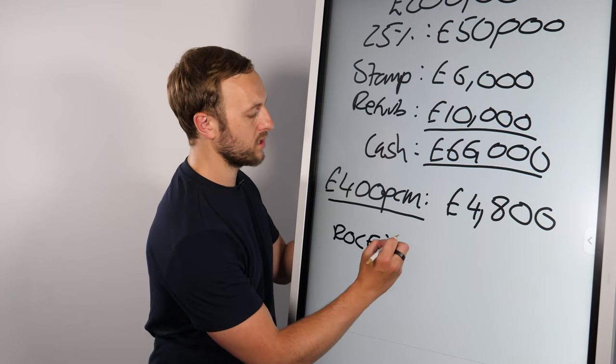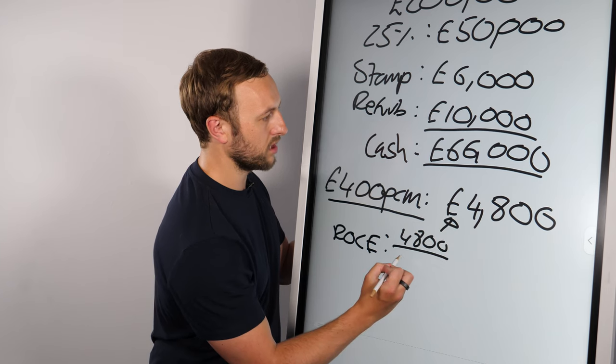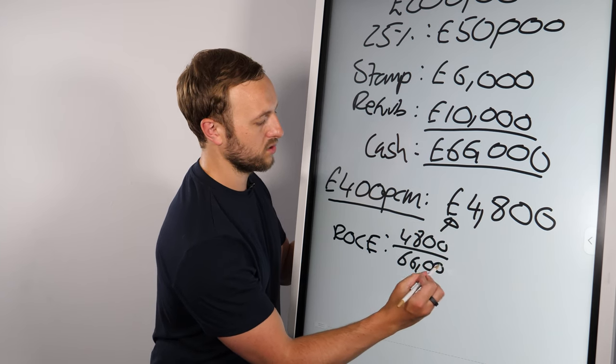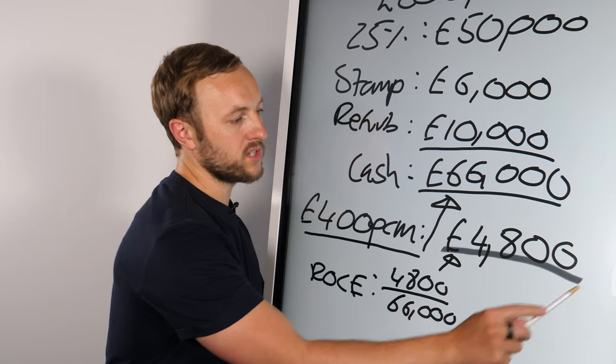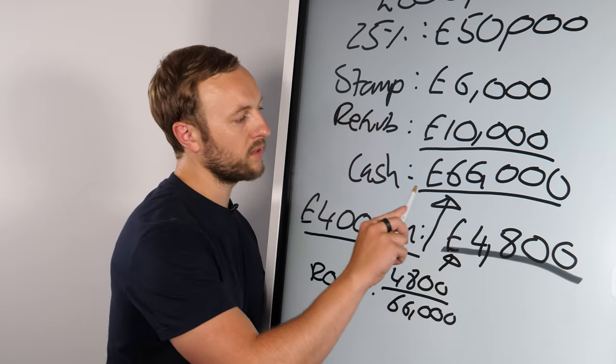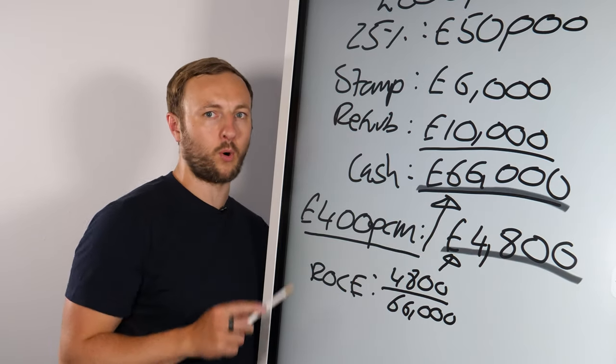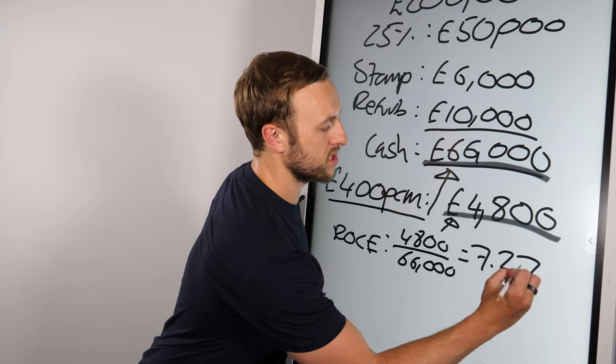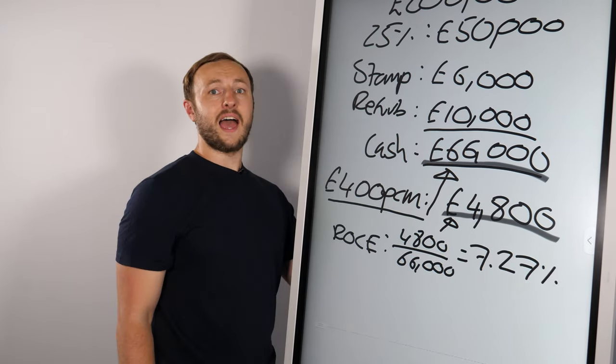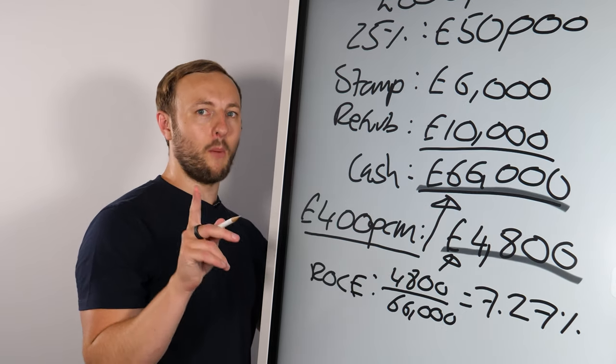And then what we're going to do is look at the return on capital employed. Return on capital employed is going to be the £4,800, this figure here, divided by the £66,000, which is this figure here. You are dividing the £4,800 per year net income divided by the £66,000 in cash that you've put into the property, which is equal to 7.27%. A nice healthy return, right? But actually it gets a lot better.